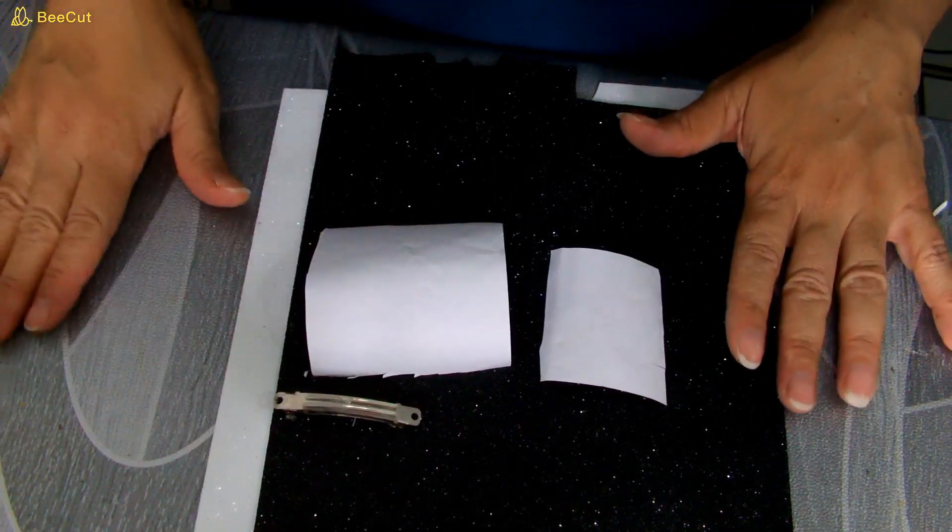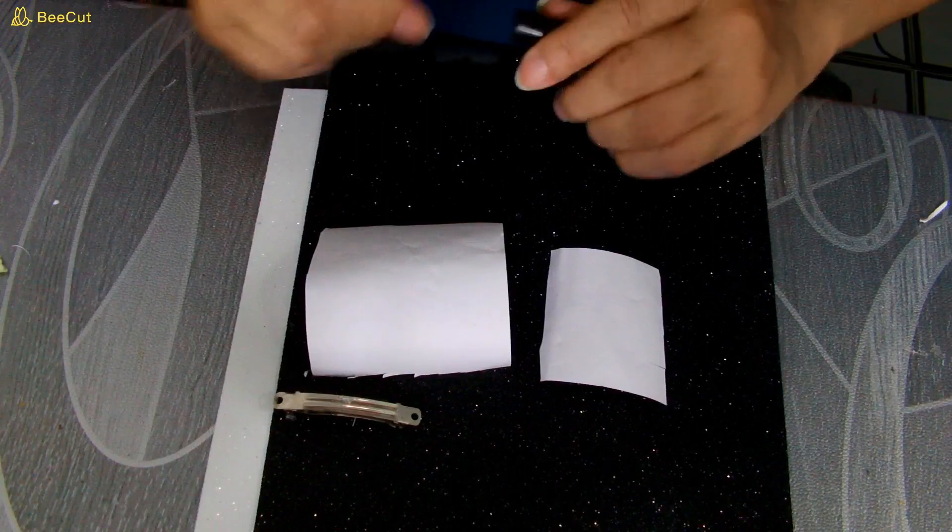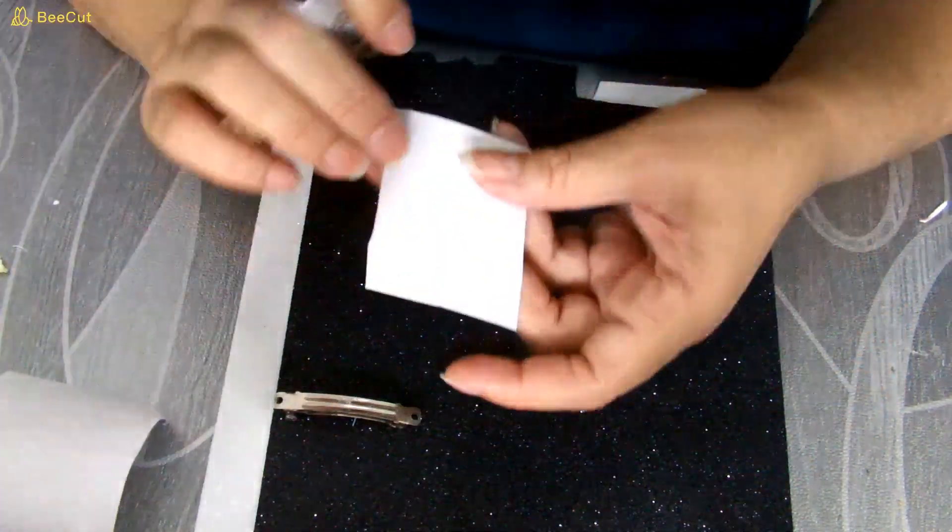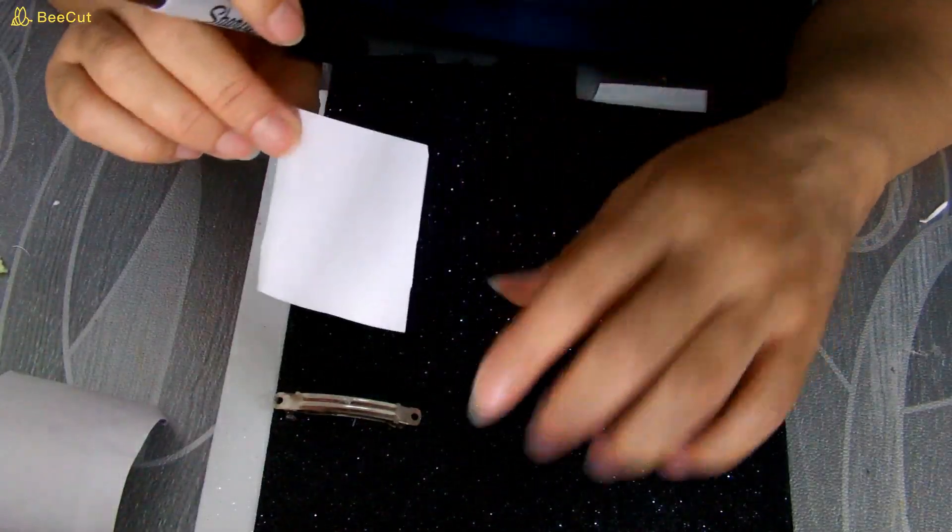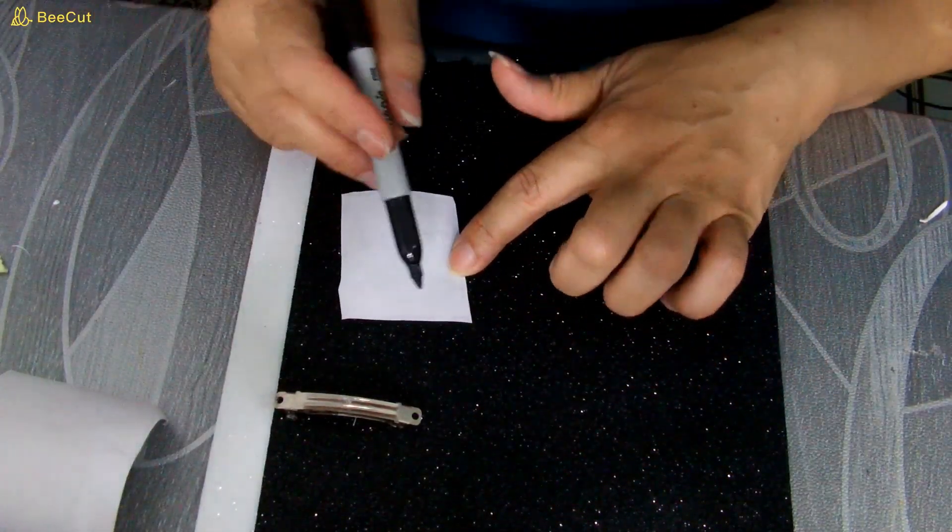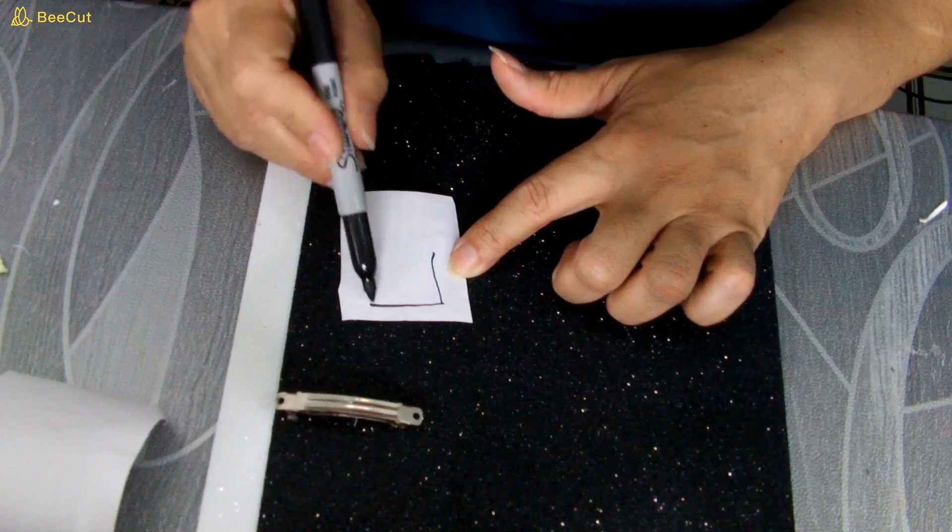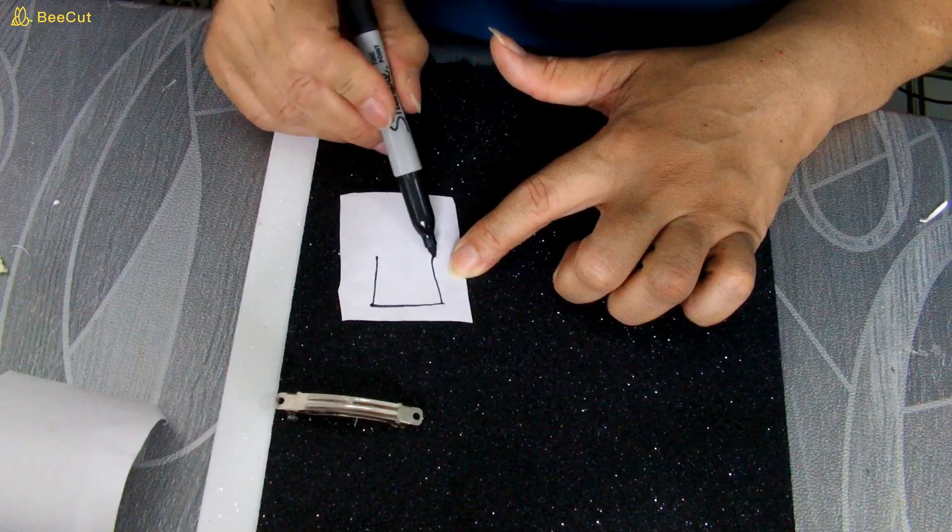Y para esto vamos a estar haciendo el sombrero de nuestro muñeco de nieve. Y para ello simplemente voy a coger un pedacito de papel y voy a hacer un rectángulo así, así, así y así.